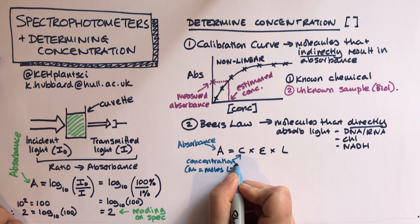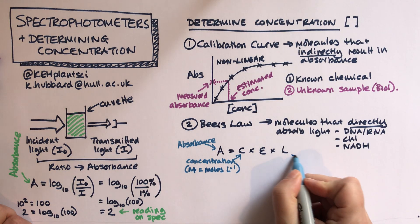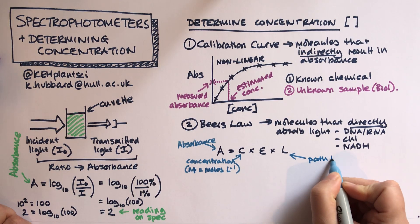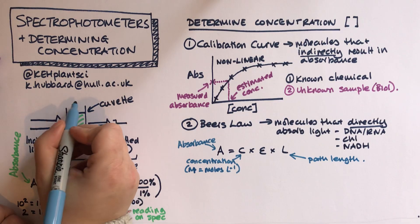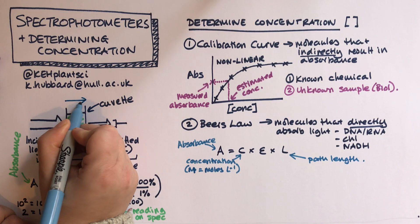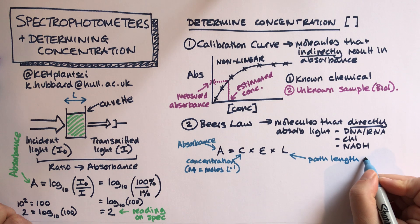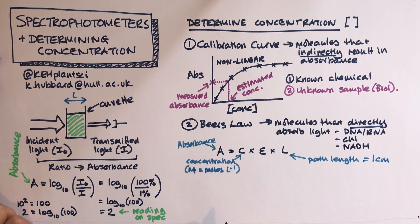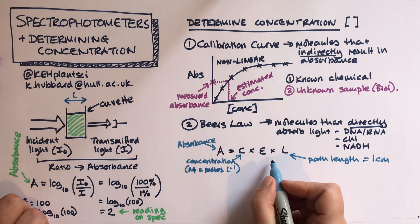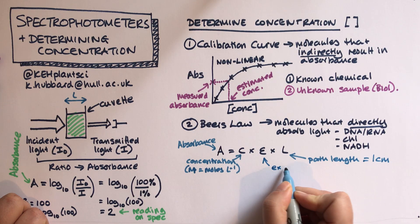Absorbance has no units. Concentration is in molar, which you might remember is moles per liter. L is the path length, so that's how far the light has shone through. That's actually this distance here, which is how big is the cuvette. That's nearly always one centimeter. It's very unusual to use a cuvette that's not a centimeter thick.